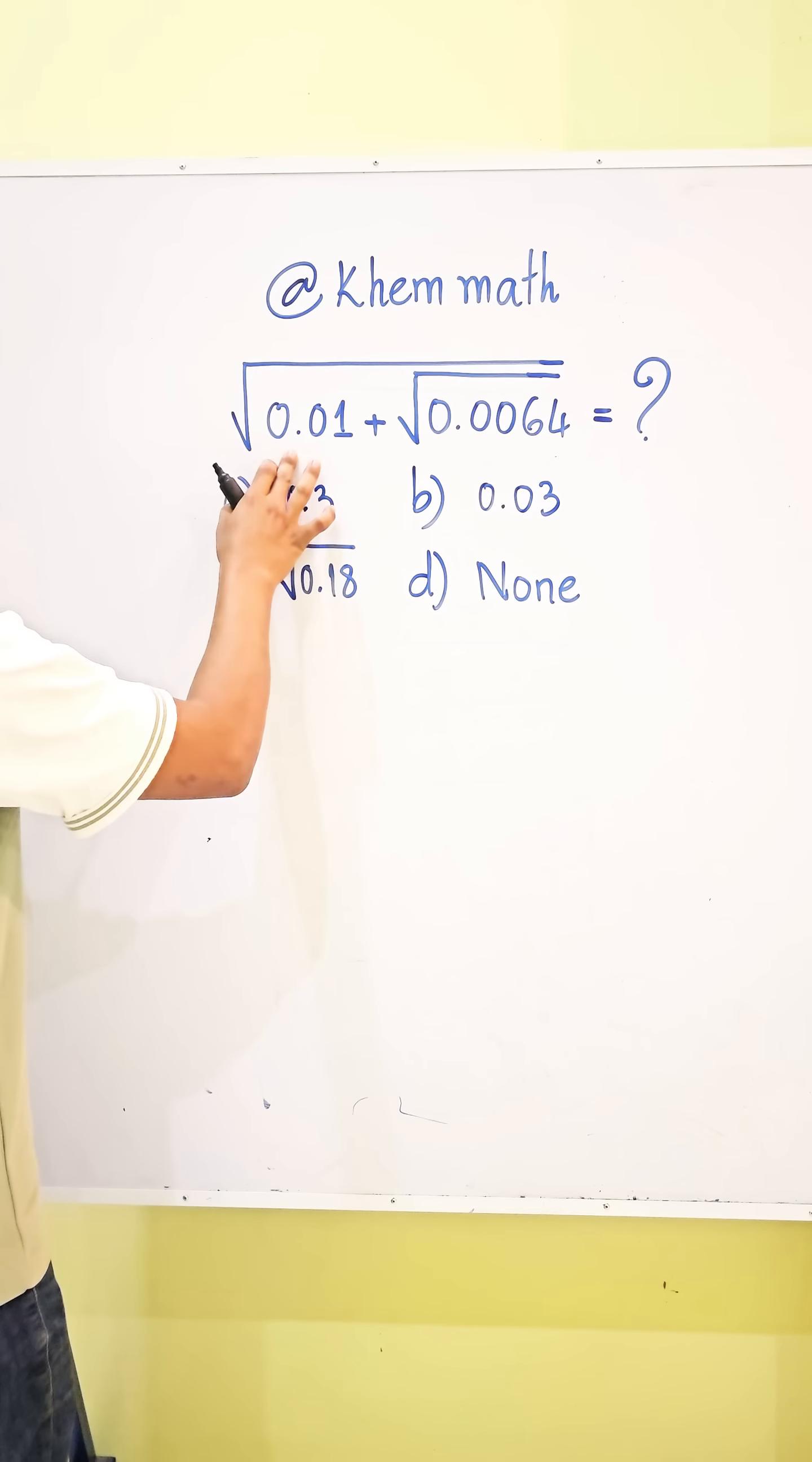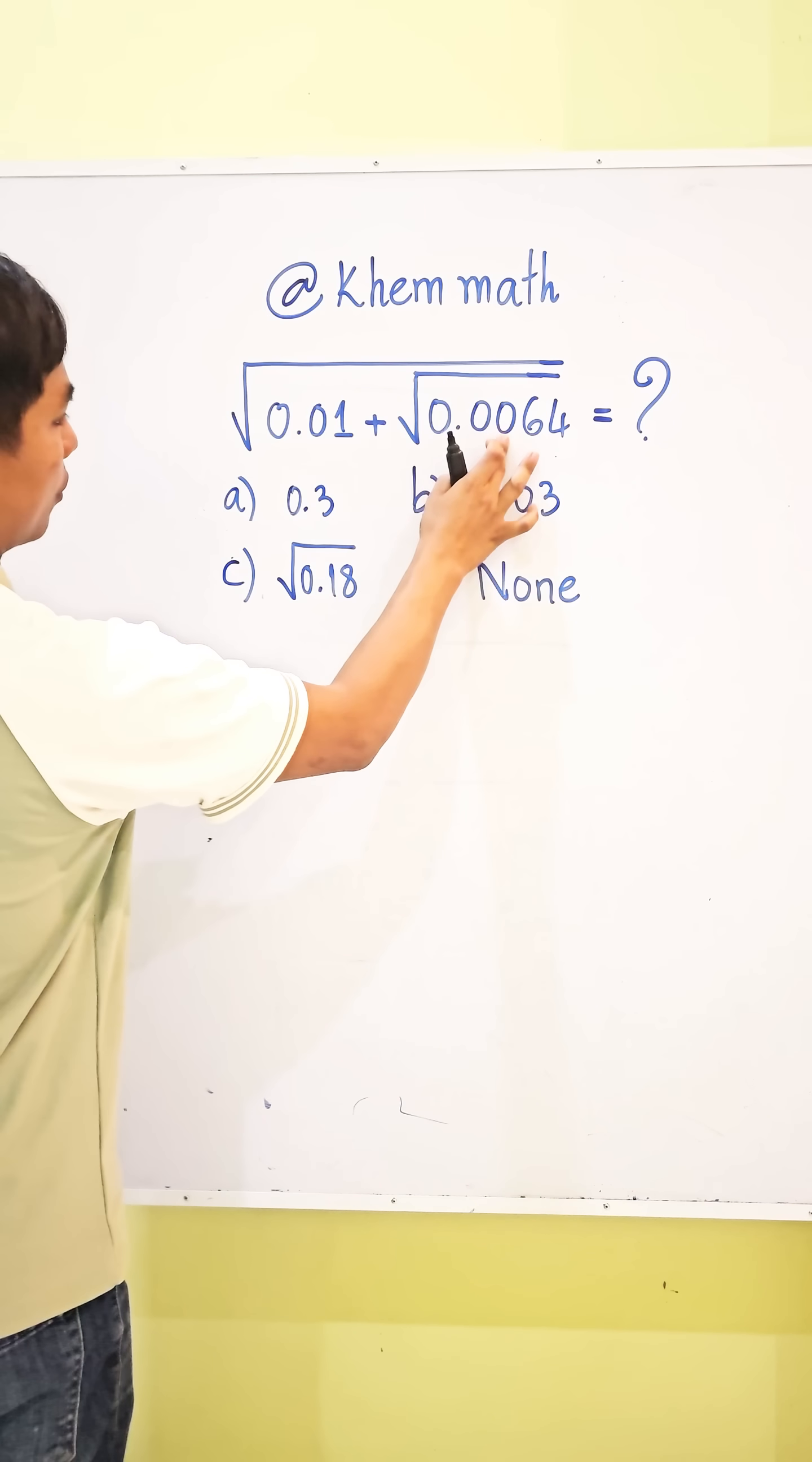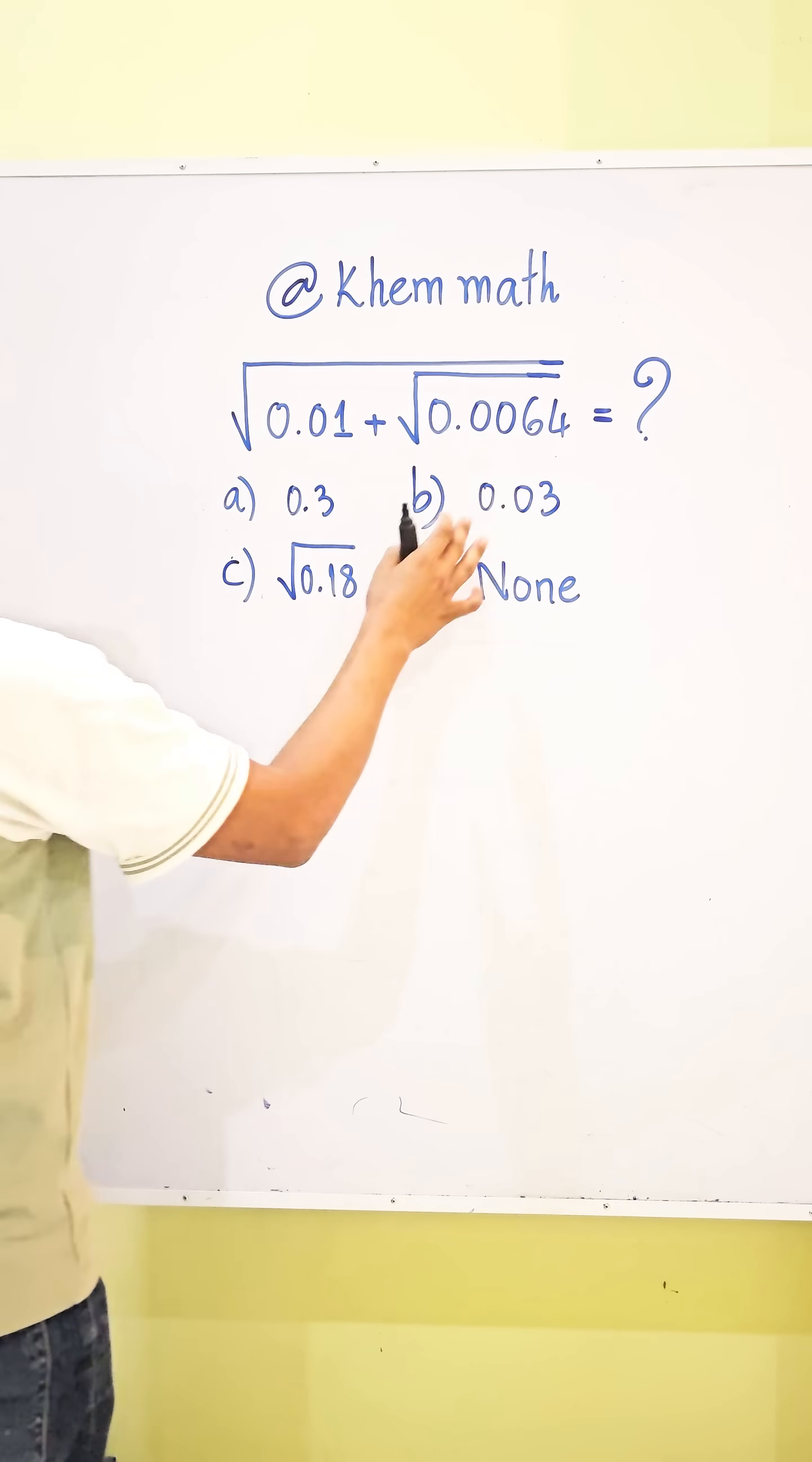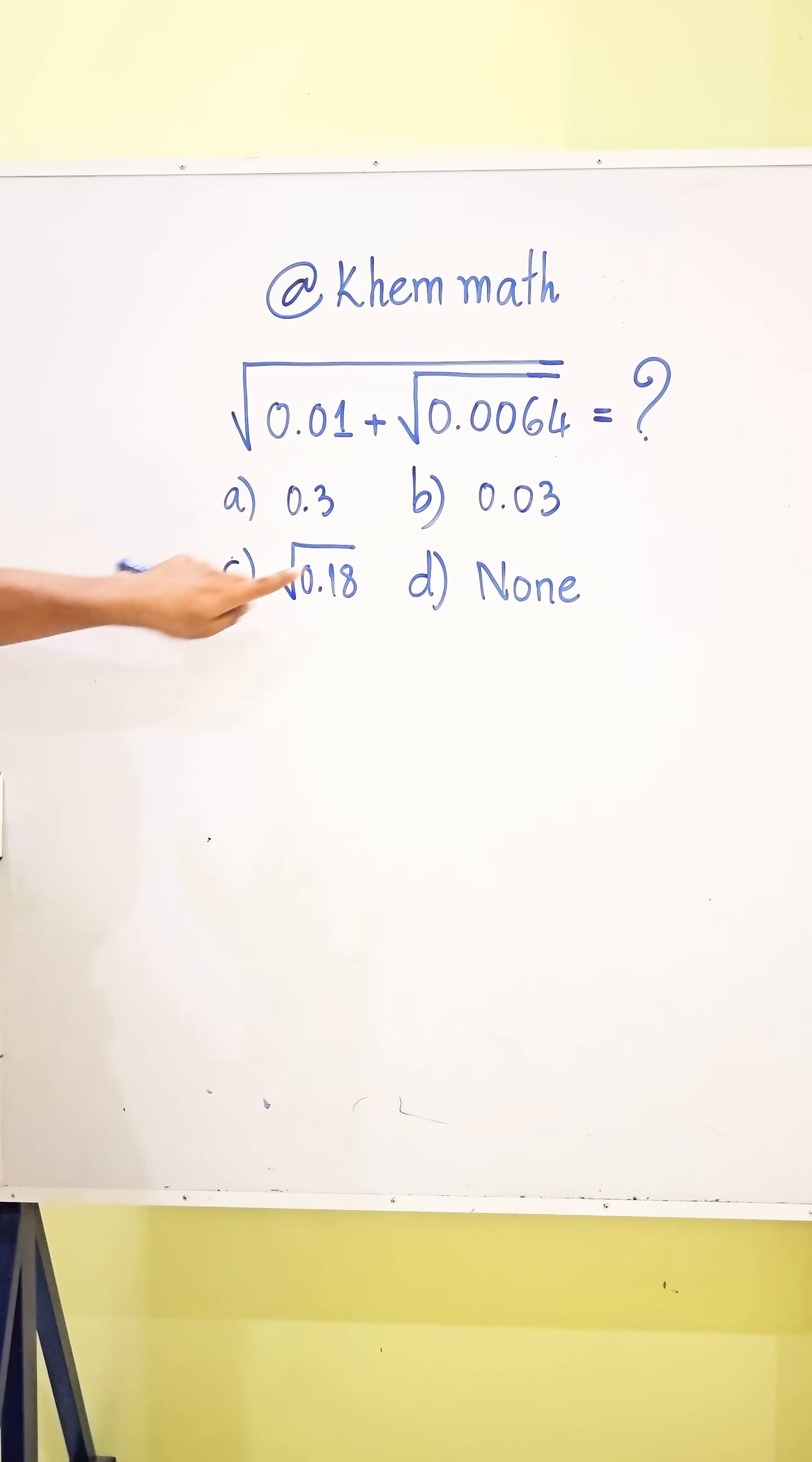Square root of 0.01 plus square root of 0.0064. What is the value of this? Our answer options are A, B, C, D. Which one?